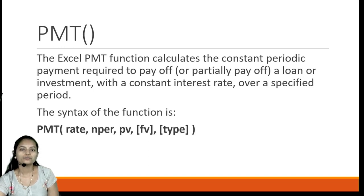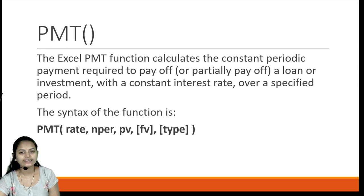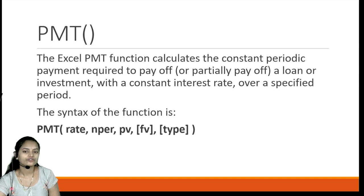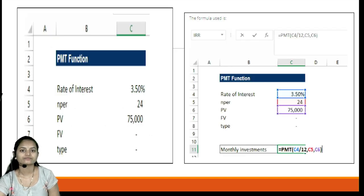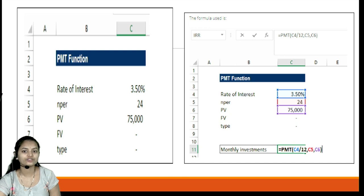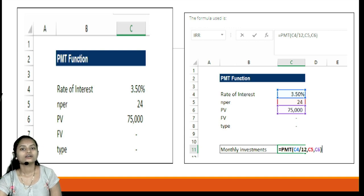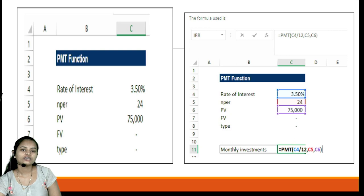The third function is the PMT function. This Excel PMT function calculates the constant periodic payment required to pay off or partially pay off a loan or investment with a constant interest rate over a specified period. The syntax is PMT with parameters: rate, nper, pv, fv, and type. A table is provided with rate, nper, pv, and fv values given, and we just need to use the PMT formula by placing the parameter values in it.